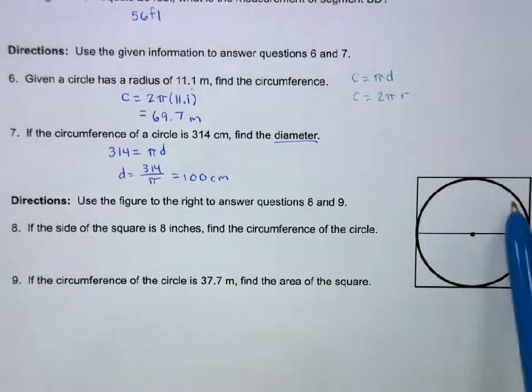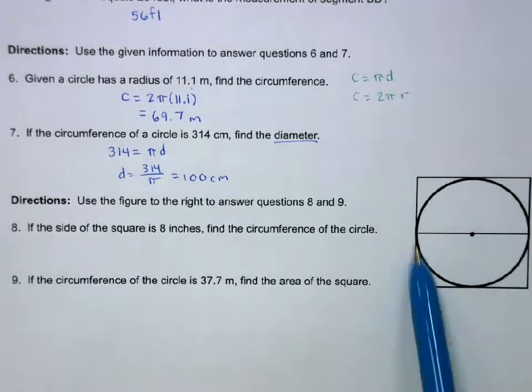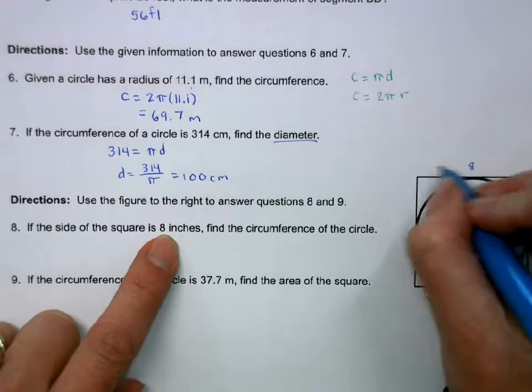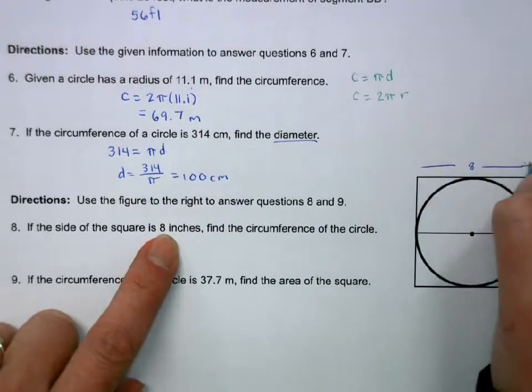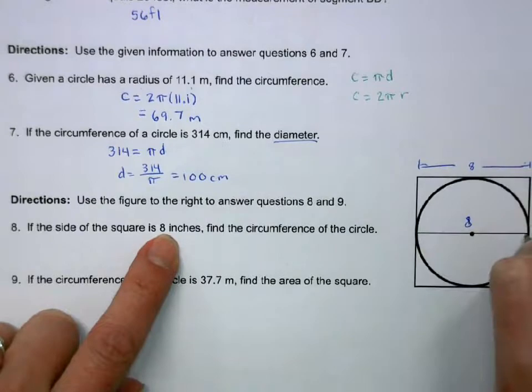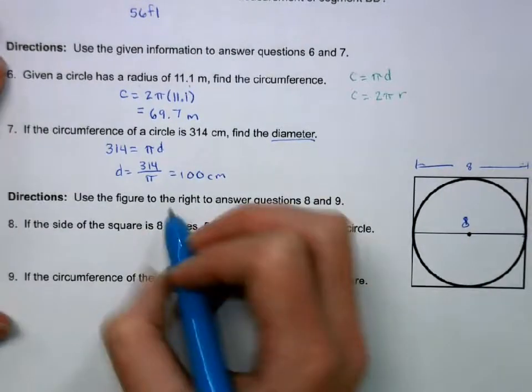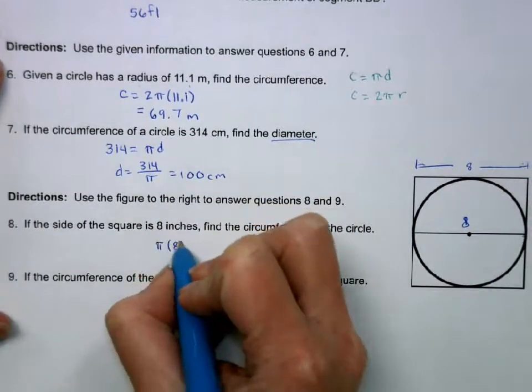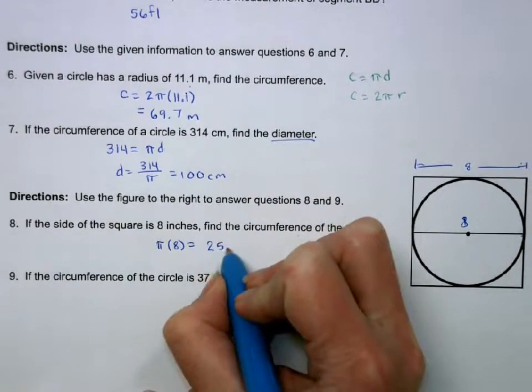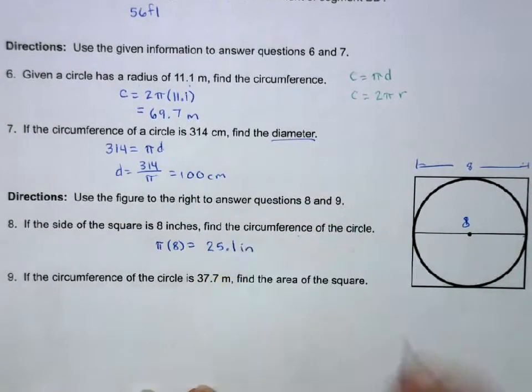And then 8 and 10. We have this circle inside this square. If the side of the square is 8 inches, so if this is 8 inches, then this is 8 inches. Okay, so the circumference is just going to be pi times 8, because 8 is really just the diameter.